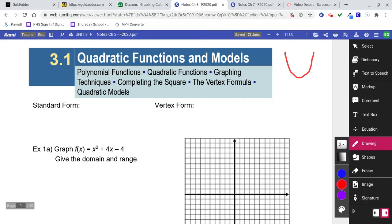You've got two main forms. Standard form is the one you're probably more comfortable with: ax squared plus bx plus c.